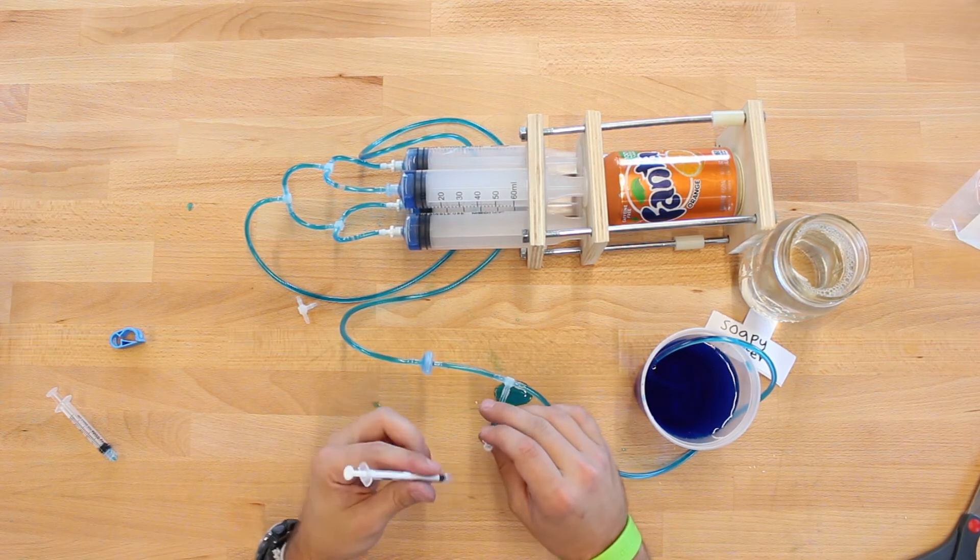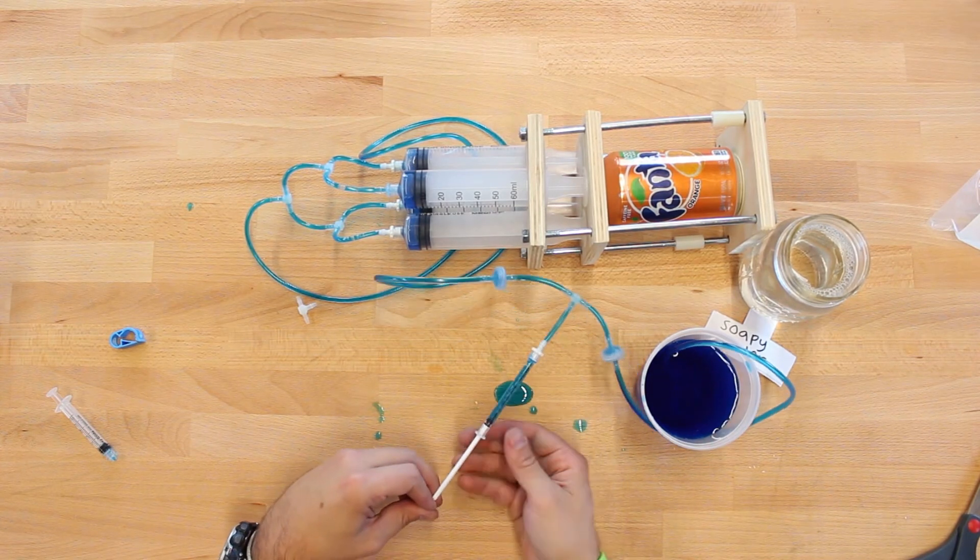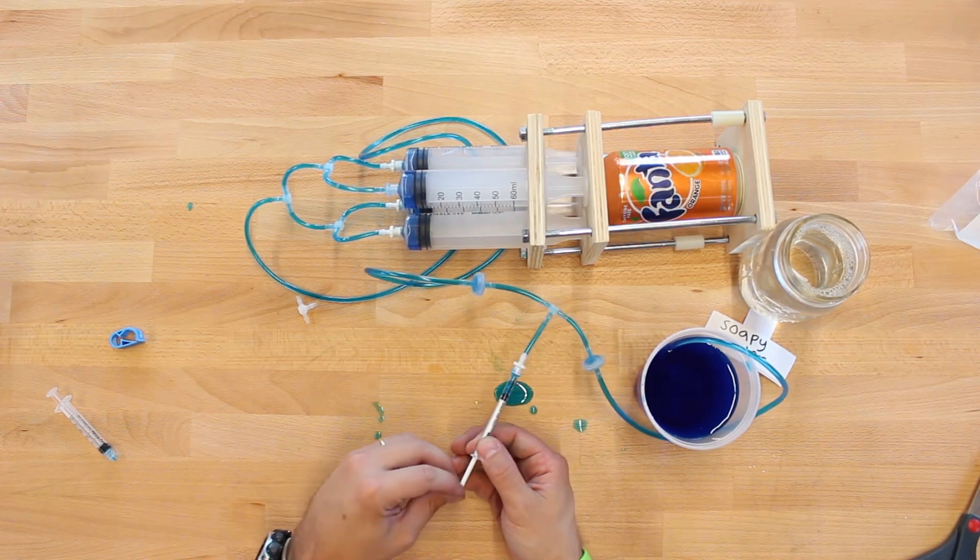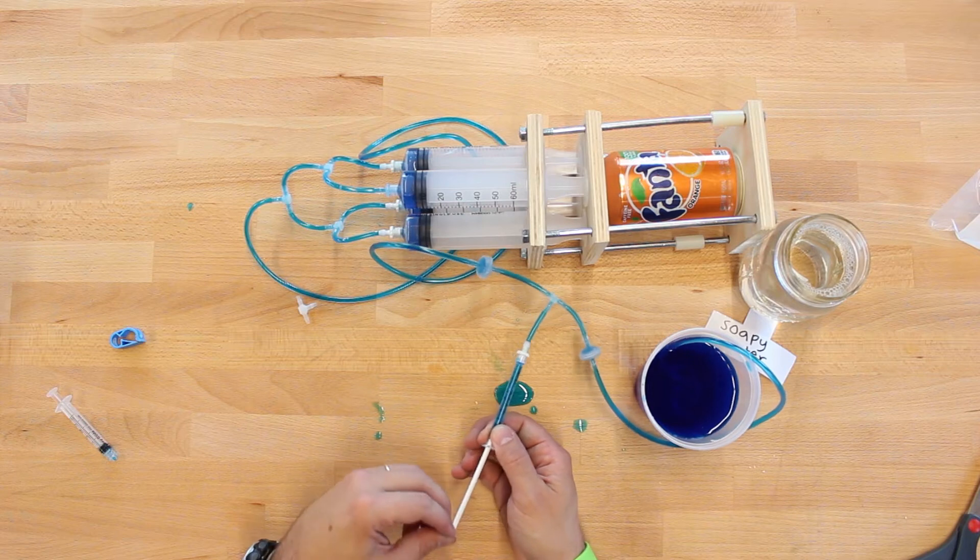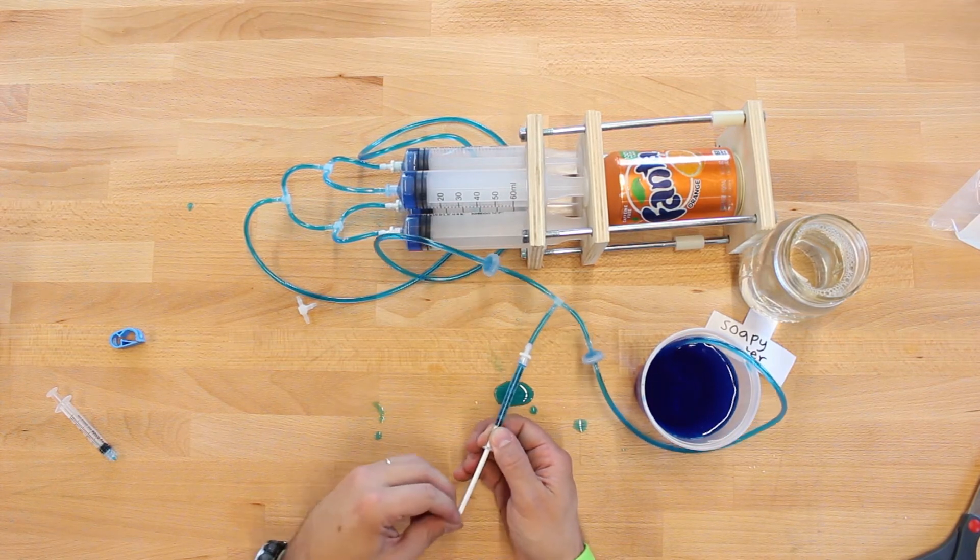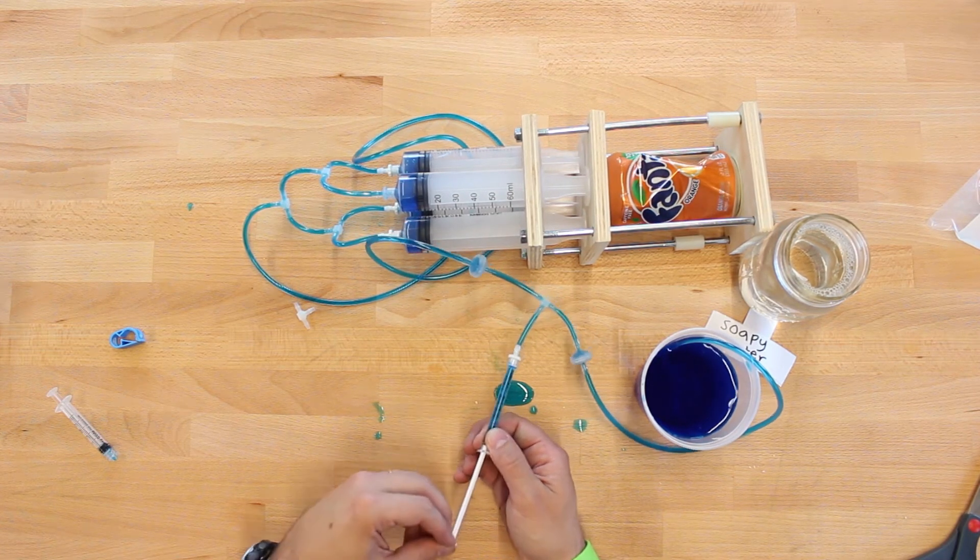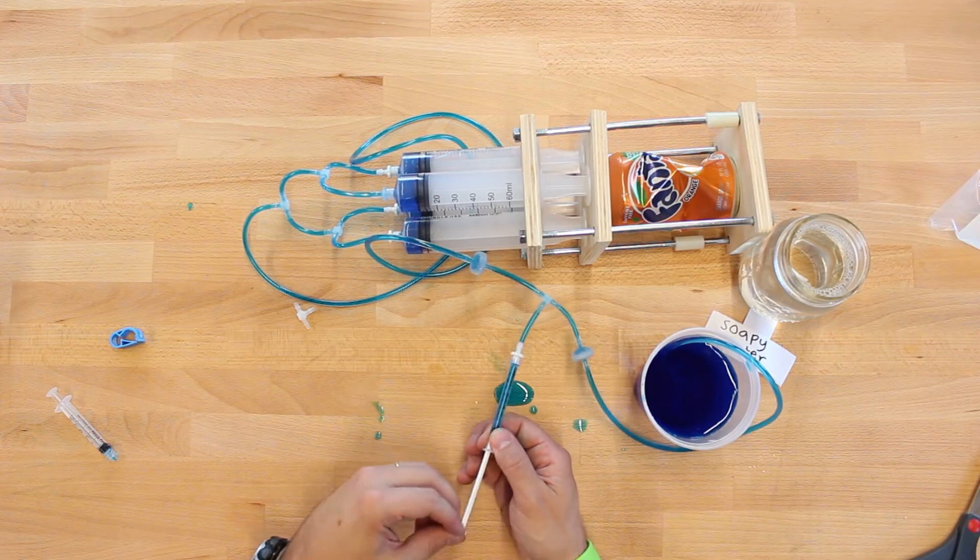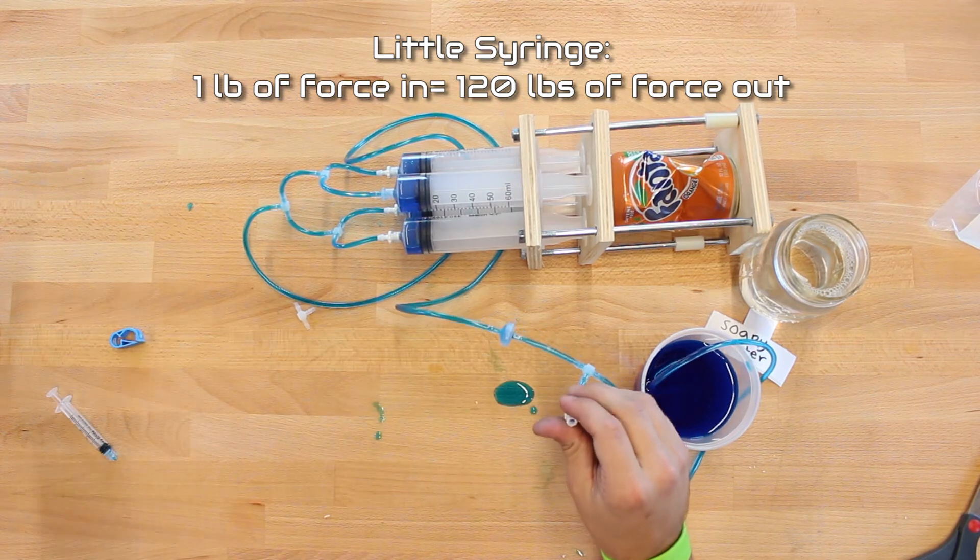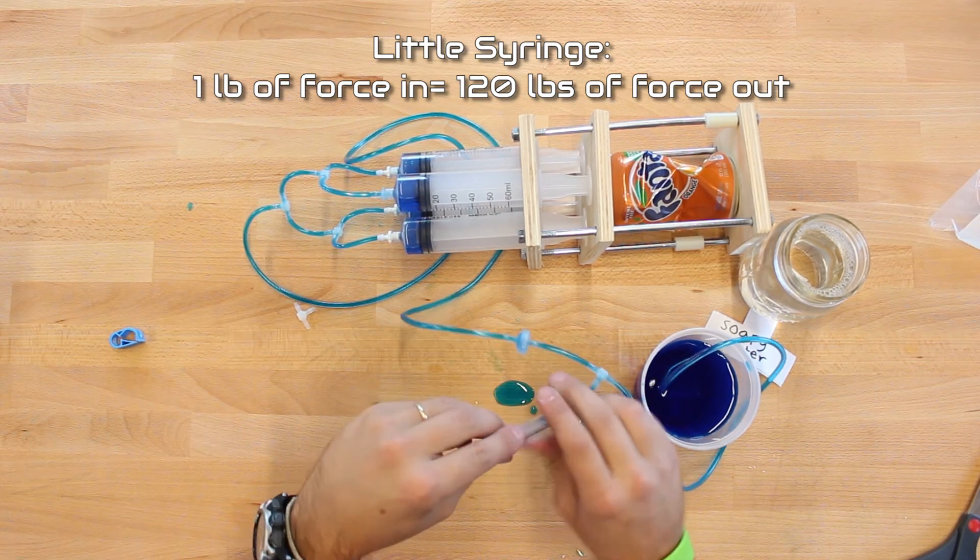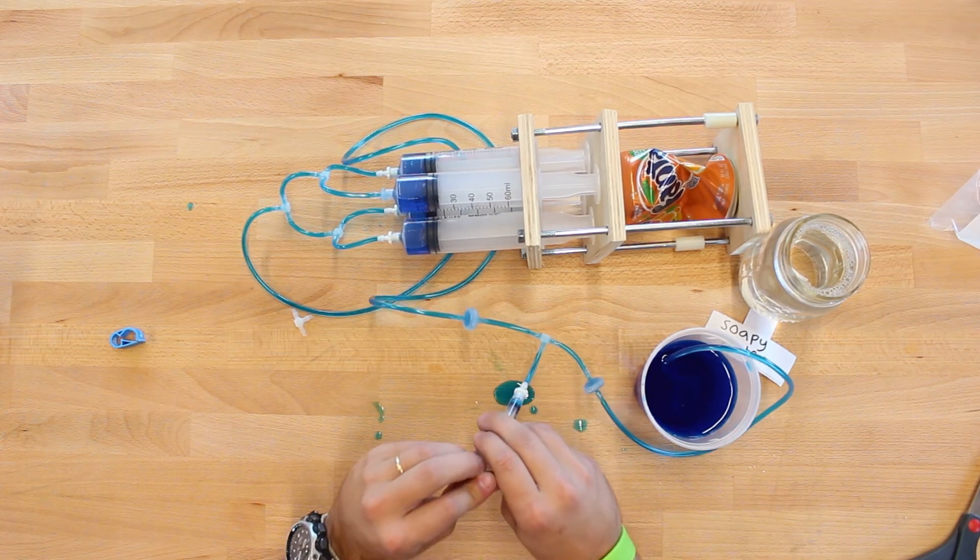Now before we crush the can, I want to see what happens if we use the tiny syringe. Oh my goodness, this is so easy to crush. So the smaller syringe makes it easier to crush, but you have to pump it more. That makes sense because it has more mechanical advantage. In fact, this little syringe has 120 times mechanical advantage. That means that one pound of force in on the little syringe is equal to 120 pounds of force out of the crushing syringes. Ten pounds of force in is 1200 pounds of force out. To see a little more about how this works, check out our lesson video.